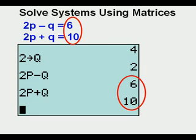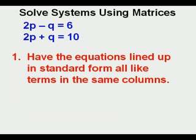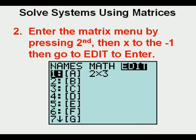Just a few things to remember. First, have the equations lined up in standard form, all like terms in the same columns. Secondly, enter the matrix menu by pressing 2nd, then the X to the negative 1 key, then go to Edit.